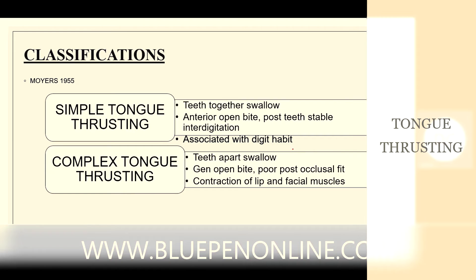The classification of tongue thrusting habit includes simple and complex types. In simple tongue thrusting: teeth-together swallow, anterior open bite, and posterior teeth are stable with interdigitation, but it is associated with digit habit. In complex tongue thrusting: it is a teeth-apart swallow, generalized open bite is present, posterior teeth also show poor fit, and there is contraction of lip and facial muscles.